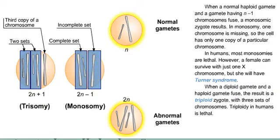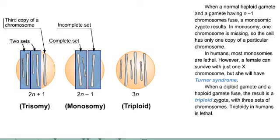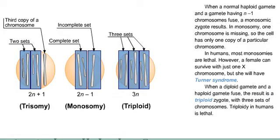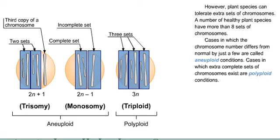When a diploid gamete and a haploid gamete fuse, the result is a triploid zygote with three sets of chromosomes. Triploidy in humans is lethal. However, plant species can tolerate extra sets of chromosomes; a number of healthy plant species have more than eight sets of chromosomes. Cases in which the chromosome number differs from normal by just a few are called aneuploid conditions. Cases in which extra complete sets of chromosomes exist are called polyploid conditions.